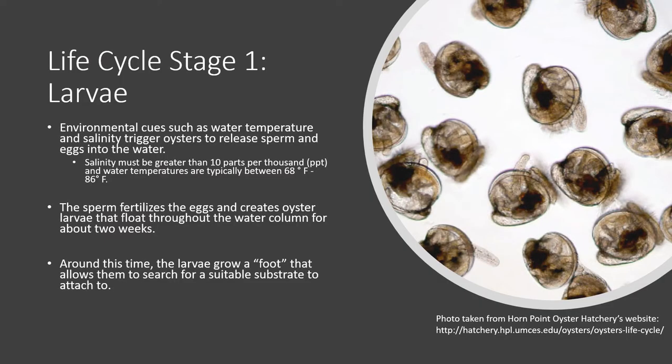Like a domino effect, all it takes is a single male or female oyster to spawn to trigger all the nearby oysters to release their eggs and sperm. A single adult female oyster can release as many as 100 million eggs into the water.